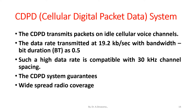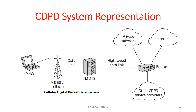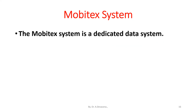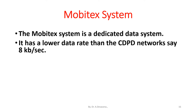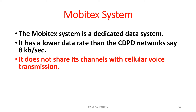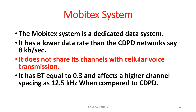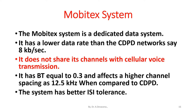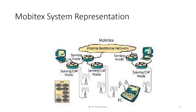The CDPD system guarantees widespread radio coverage and ease of adaptation; a CDPD system representation is shown. The Mobitex system is a dedicated data system with a lower data rate than CDPD — 8 kilobits per second — and does not share its channels with cellular voice transmission. It has a BT equal to 0.3 and uses a higher channel spacing of 12.5 kilohertz compared to CDPD.